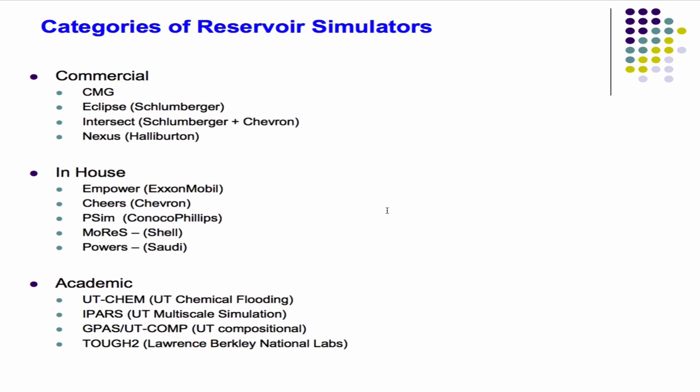Then of course there are the academic codes. Three of the four on the list are basically from UT: UTChem, which is probably the world's leading chemical EOR simulator developed here for 20 or 30 years; IPARS, a code by Mary Wheeler; and GPASS, Kami Seppinori's compositional flow simulator. We'll talk a bit about IPARS and GPASS. TOUGH2 is an open-source code from Lawrence Berkeley Lab used for petroleum, environmental, contaminant transport, and geothermal problems — and you can actually go download it.